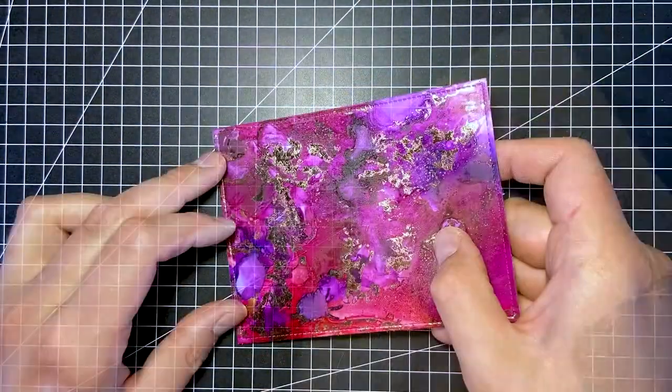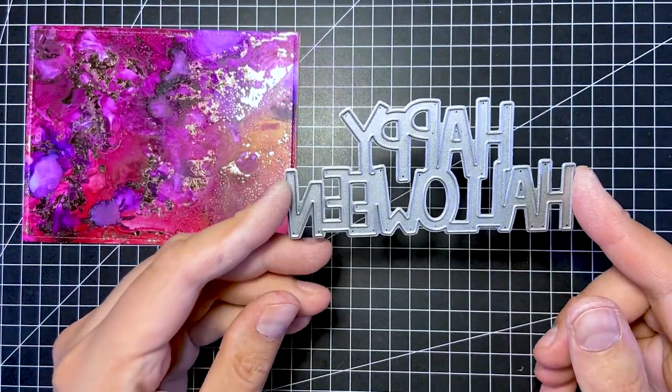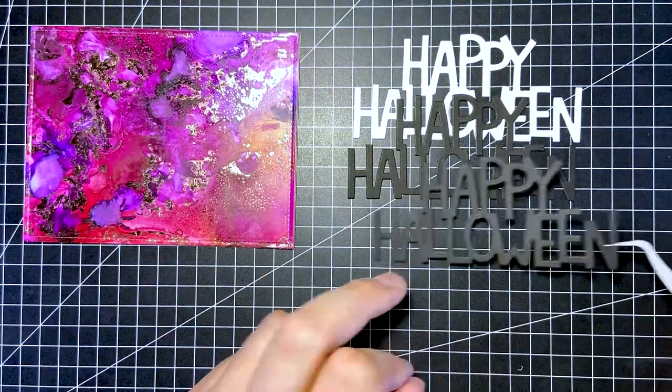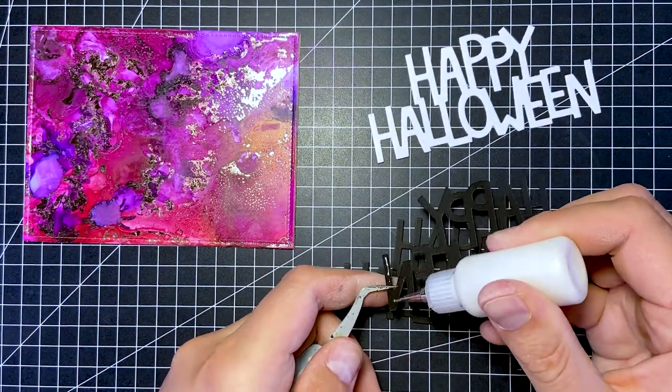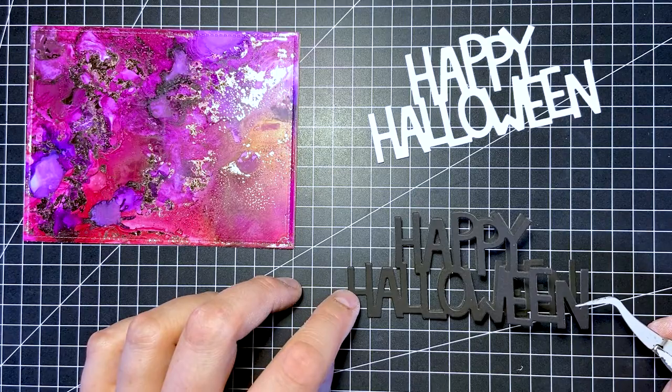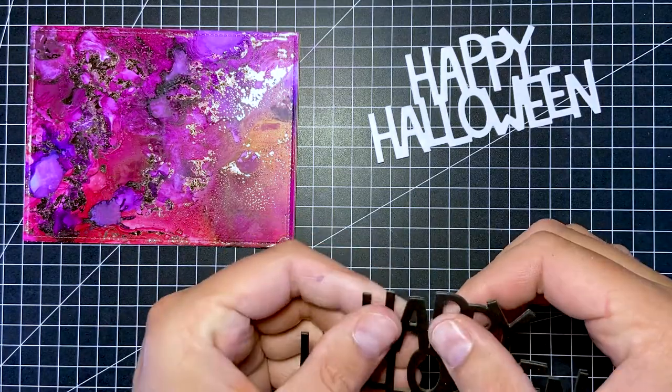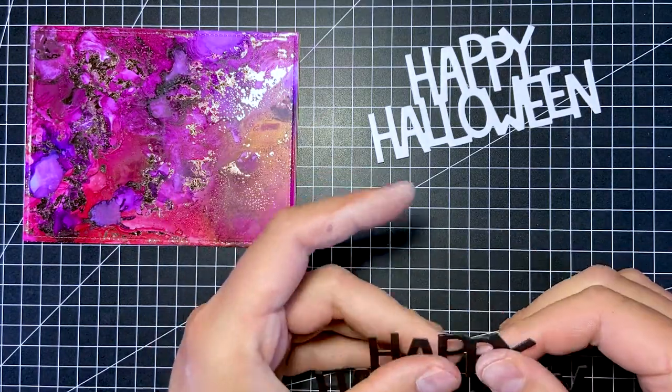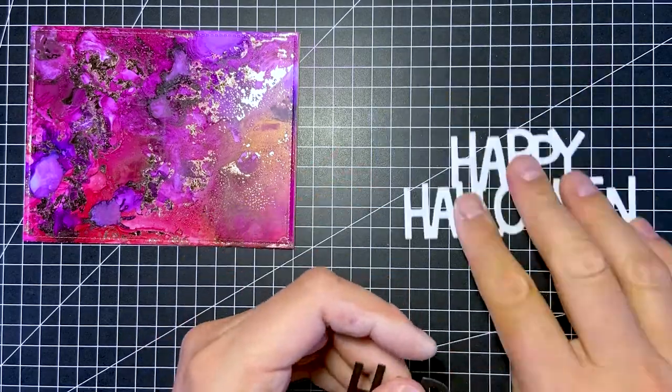Now it's time to assemble the card. I first adhere the background to a kraft paper card base with my ATG gun. I use the giant Happy Halloween die from Lawn Fawn to cut two pieces out of black cardstock and one piece out of white cardstock. I first glue the two black pieces together to create a thicker sentiment.